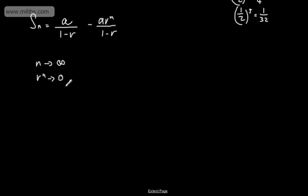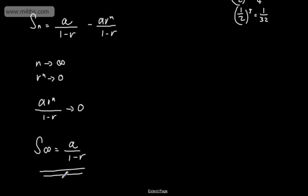So what we end up with now, this fraction right here a multiplied by r^n over 1 minus r will tend to 0. So that leaves us now the following. We can write this as the sum to infinity will be equal to a/(1-r). And that is our formula.